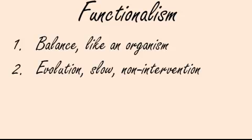So that's the answer to the first question: under functional theory, we exist in a balanced, methodical, stable state. In answer to the second question — how do we change? — this theory goes all the way back to Herbert Spencer, Auguste Comte, Emile Durkheim, and Charles Darwin, who wasn't a sociologist but whose work was applied to sociology at that time. You can see the link to Darwin's evolutionary theory. This theory says that society changes by a process of evolution — that it is a slow process, that it happens on its own, and that we don't have to intervene to make it happen.